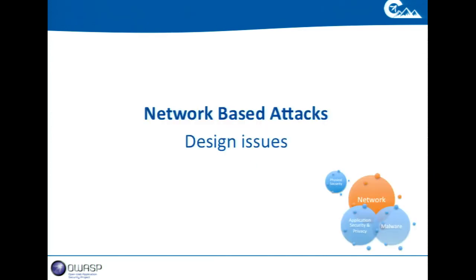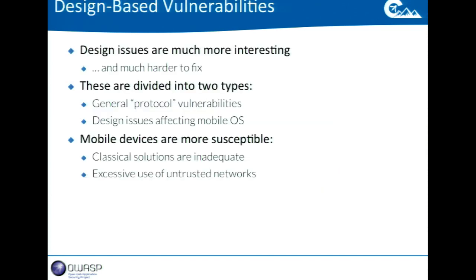We talked about implementation bugs. Let's talk about design issues. We really like design issues because they stay — they're going to be with us for years. We can divide them into two sections: designs of the protocols themselves, like how HTTP and HTTPS work, and design of the operating systems themselves. Mobile devices are much more challenged with these types of issues. All the classical security paradigms used for the past 20 years on desktops are not really applicable for mobile.